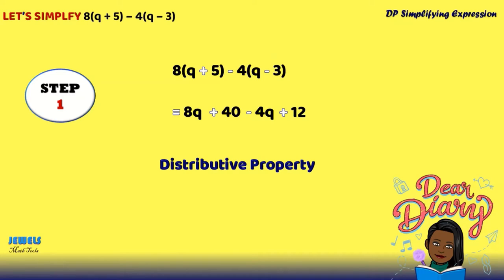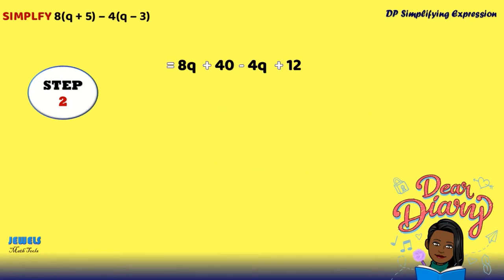Now that we've applied our distributive property to our parenthesis, we're now going to move on to our second step, which is to identify and collect our like terms.